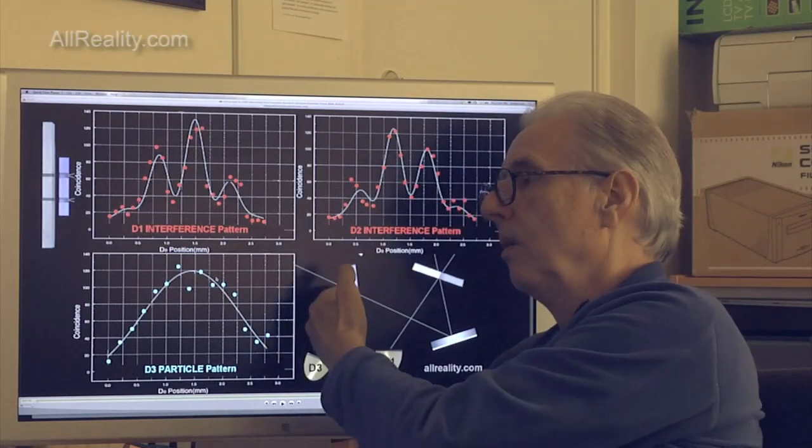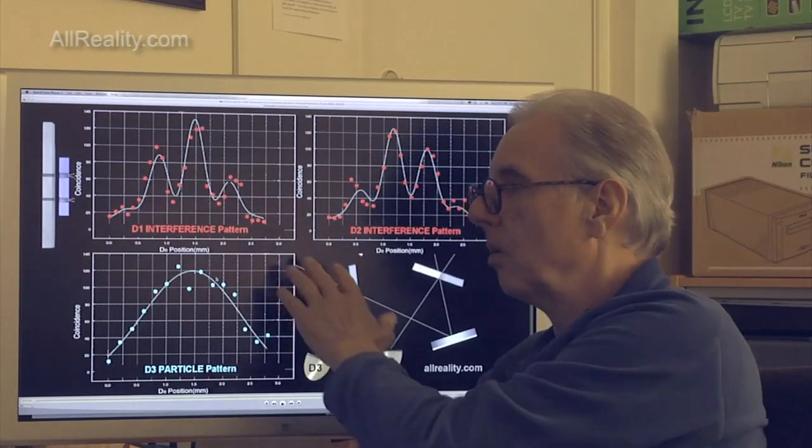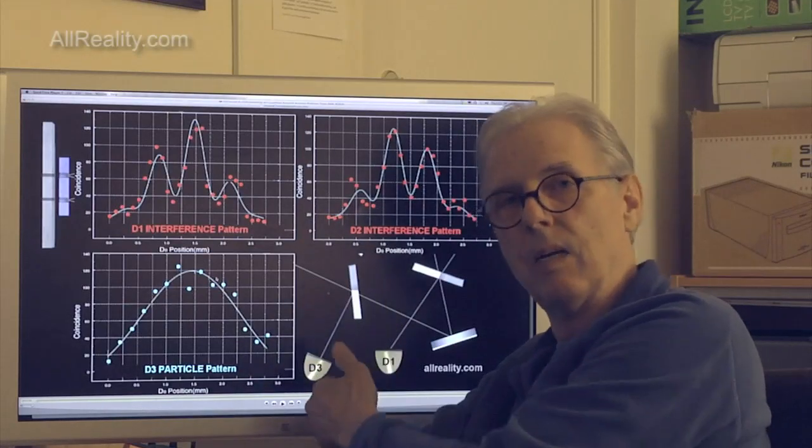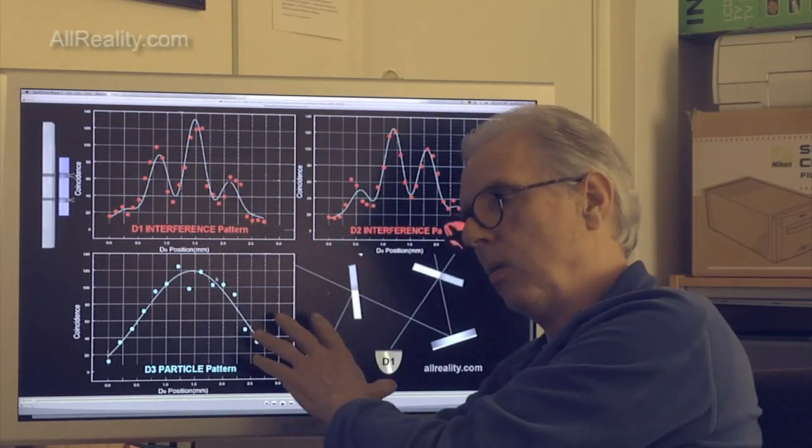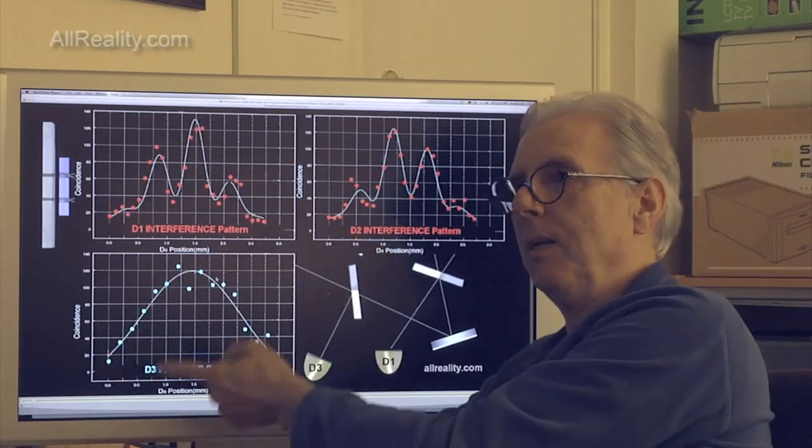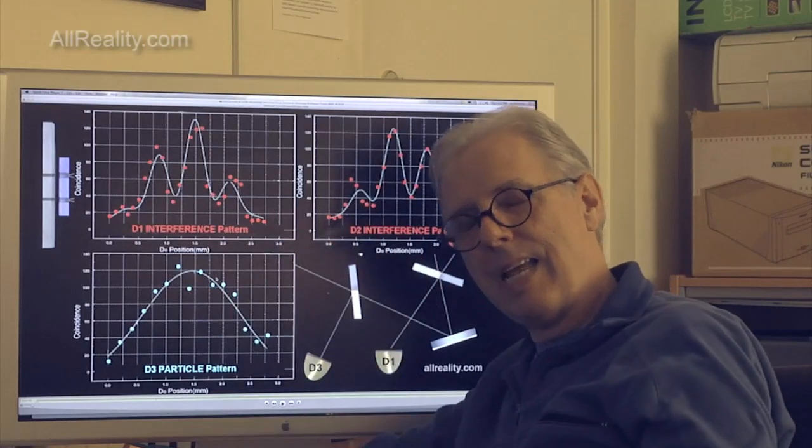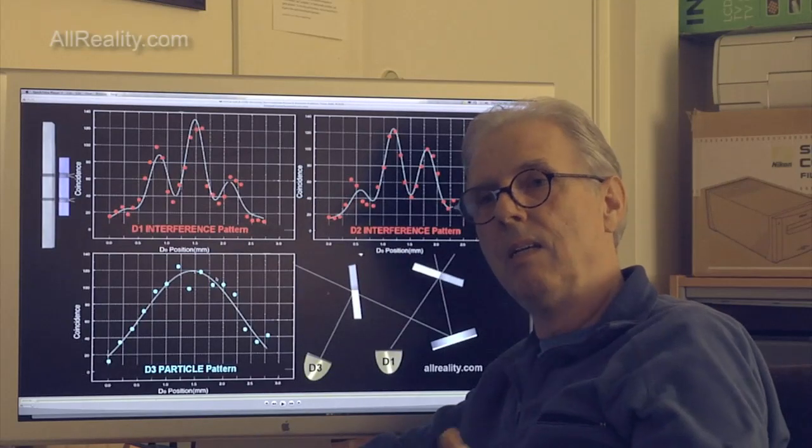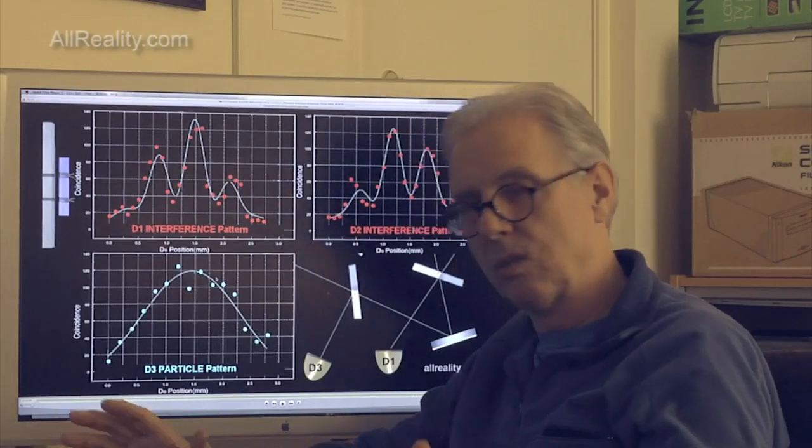So, that's how the delayed choice quantum eraser experiment works. Of course, for our purposes here, we're just pointing out that data was not detected, which path information was not detected and then erased. It was just obfuscated, was never detected. Of course, with this experiment, there's the other big question of how is it that whether or not you detect something eight nanoseconds after an event, registering of quanta on a screen, that then it affects what you get registered on the screen. Is that retrocausation and so on? And that, on our all reality page on the double slit experiment section, you can see all about that.